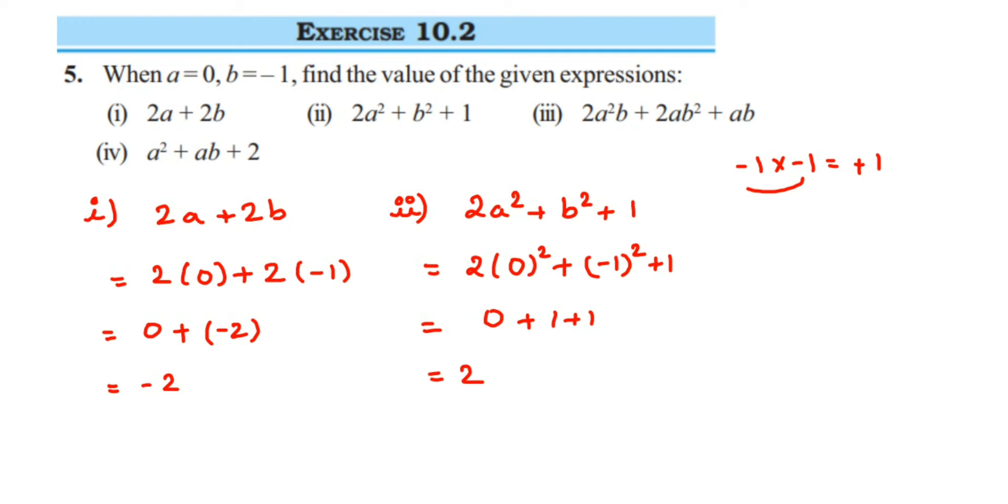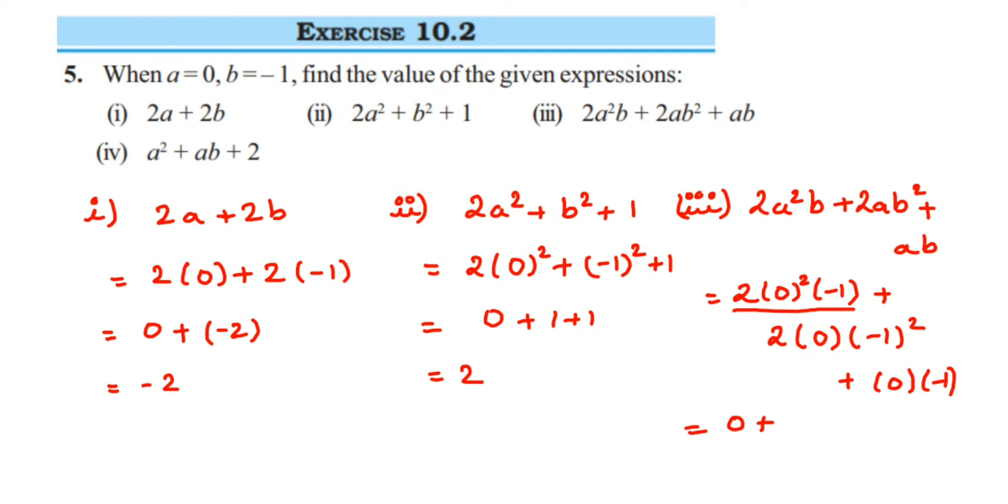Third question: we have 2a²b plus 2ab² plus ab. Wherever you have a, we have to put 0, so the whole expression becomes 0 here. It's 2 into 0² into minus 1 plus the second term is 2 into a value is 0 and b value is minus 1² plus we have ab, so 0 into minus 1. Whenever 0 is getting multiplied with any number, the whole thing will become 0. So this will become 0. The first term will become 0 because we have a 0 there. Again we have 2 into 0 into minus 1², it will become 0, and 0 into minus 1 is 0. So the whole answer will become 0. That was the third question.